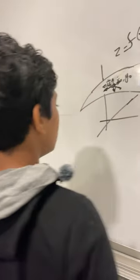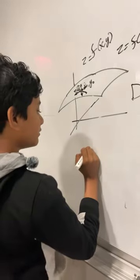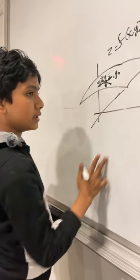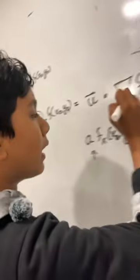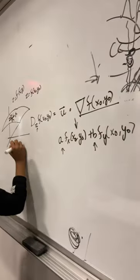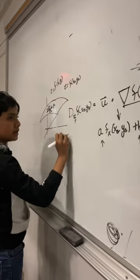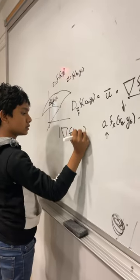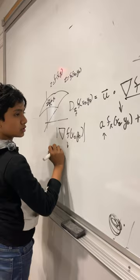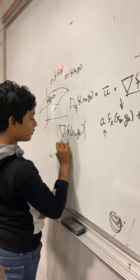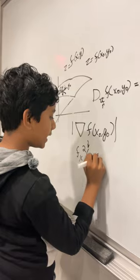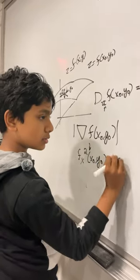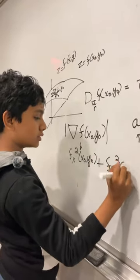And the maximum of the directional derivative at a certain point is determined by the gradient of the function. Specifically, it is just the magnitude of the gradient of the function. In other words, it is the partial derivative with respect to x squared plus the partial derivative with respect to y squared.